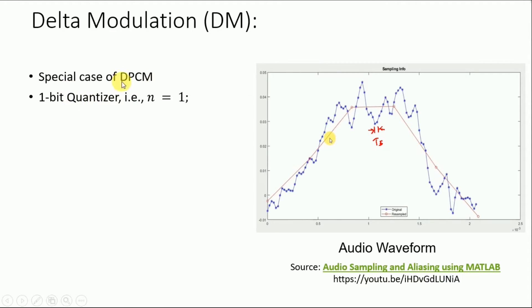So by special case what we mean is that the number of bits that we assign for the quantizer is simply 1 in Delta modulation, whereas the n can have any value in our DPCM system. So if n is equal to 1, this means that the number of quantization levels which is equal to 2 power n, so if n is equal to 1, we would have two levels.